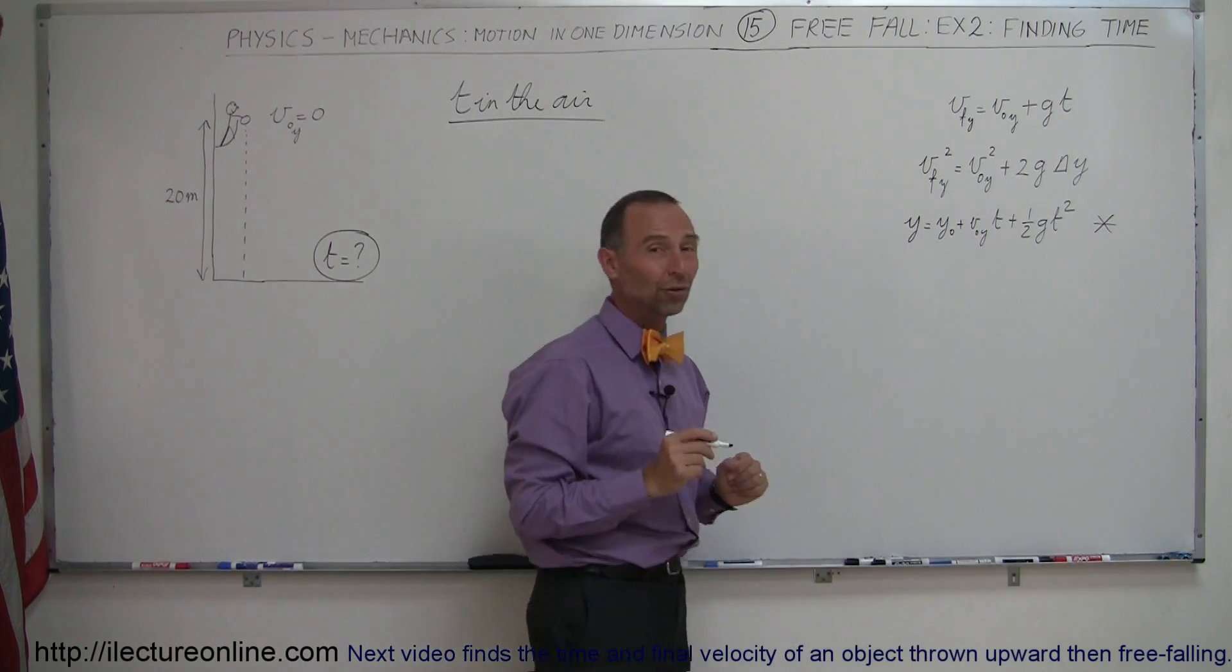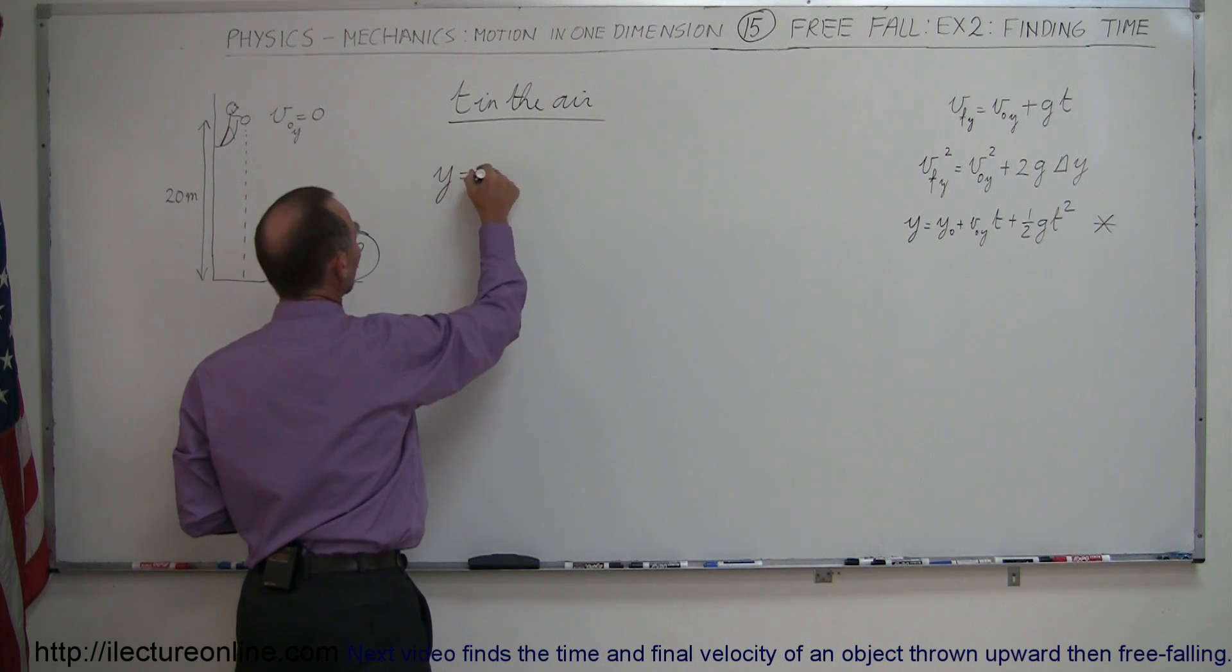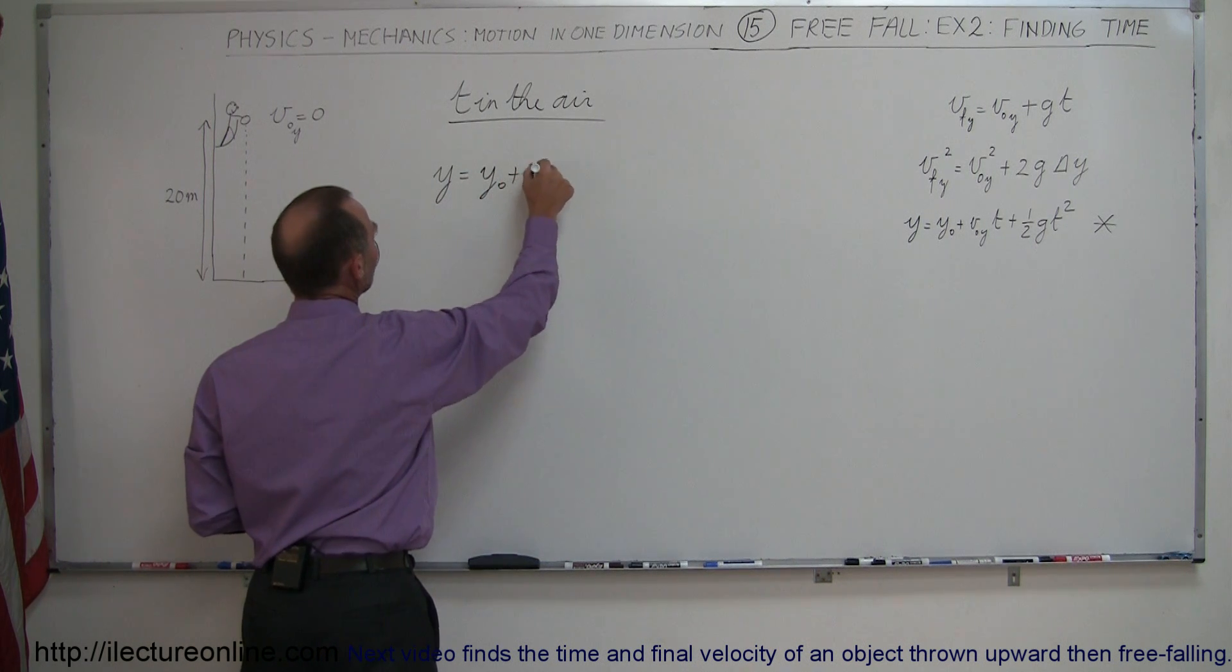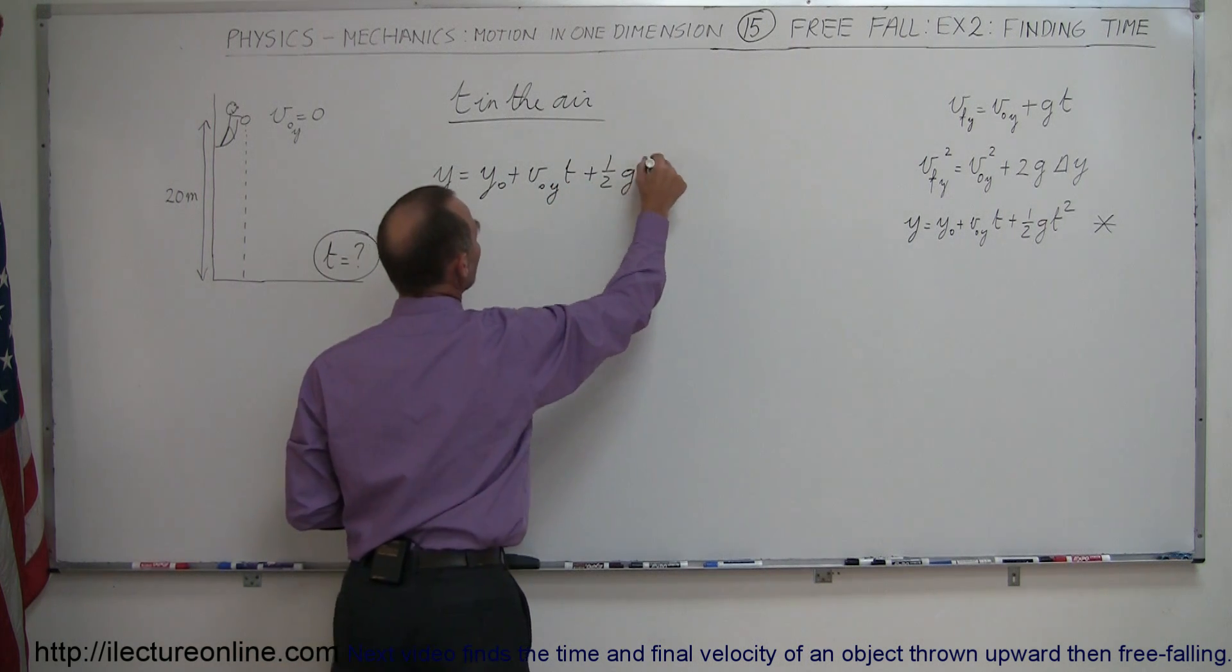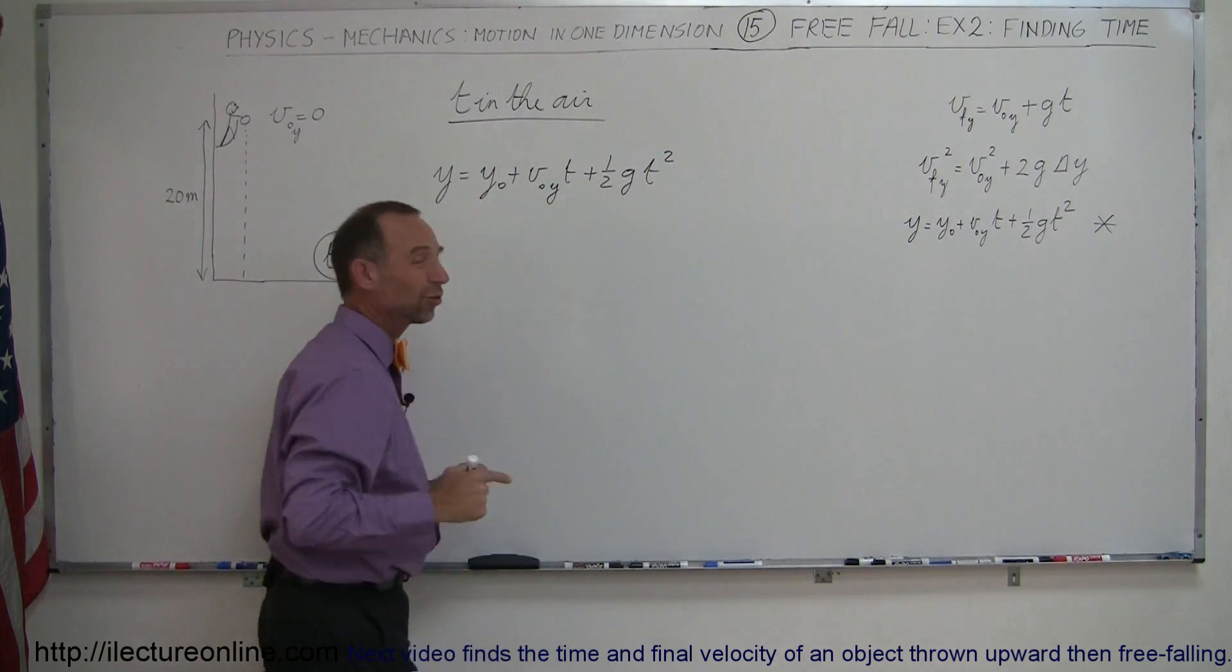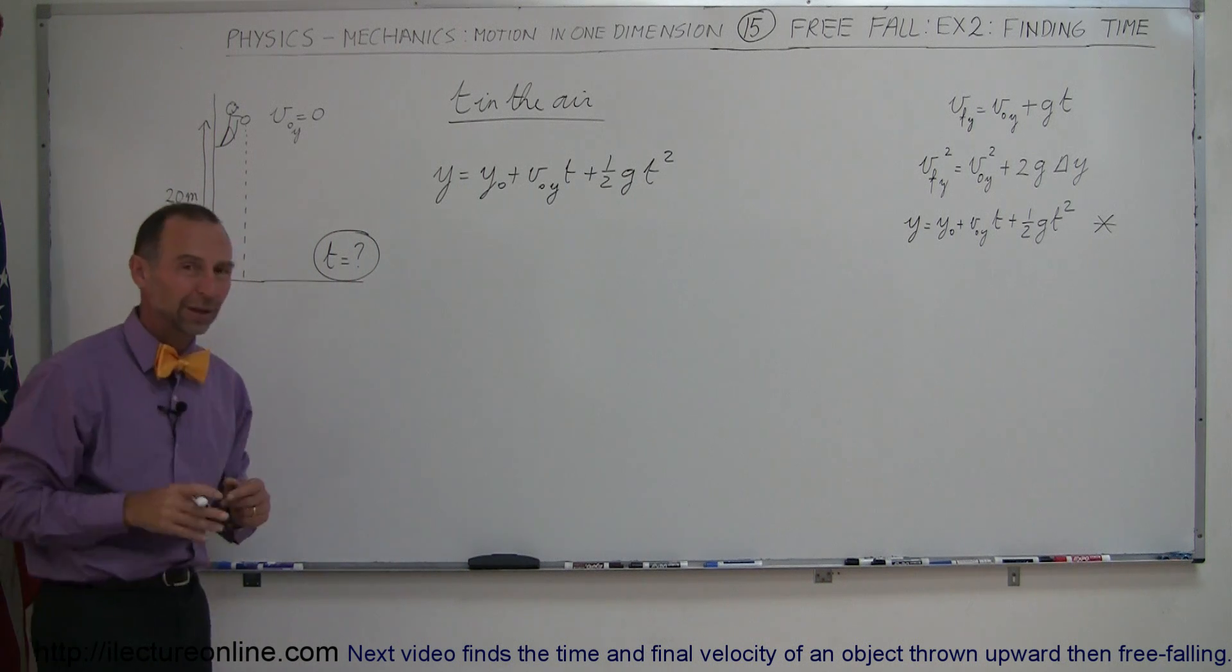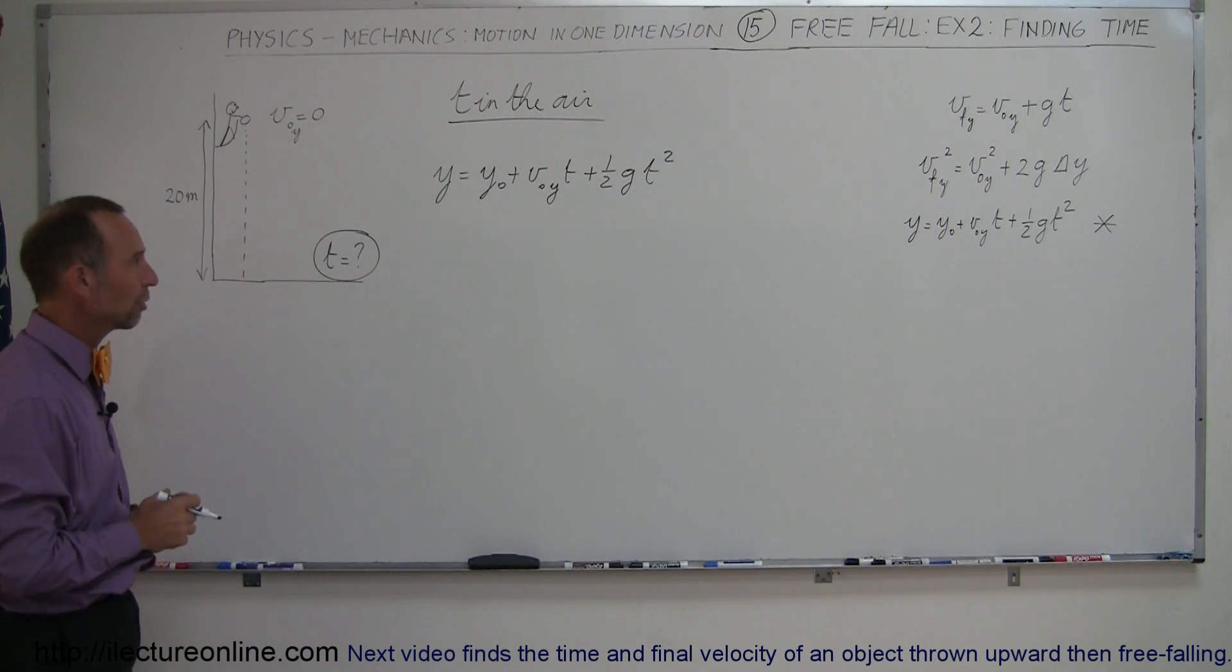So let's go ahead and try that equation. So we have y equals y initial plus v initial in the y direction times time plus 1 half g t squared. And of course, we're solving this for time. So it looks like we're going to have to solve a quadratic equation.